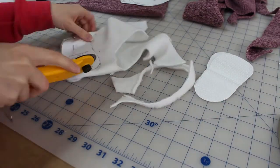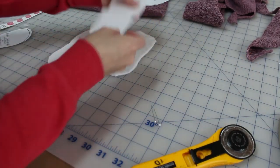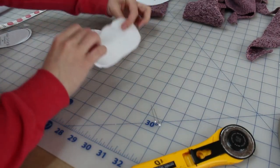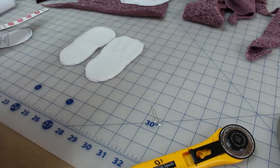So these pieces, they'll be kind of sandwiched in between. So we'll have this grippy fabric on the bottom, and then we'll have our inside fabric.